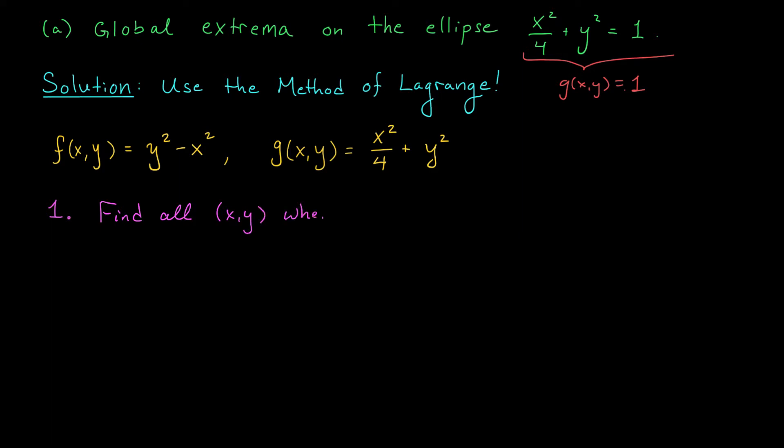Remember, I mentioned that global maxes and mins can occur at these points, but they won't get picked up by our Lagrange equation. So I guess our first job here would be to find the gradient of g. The gradient vector, nabla g, is given by partial g by partial x, that's x over 2, and partial g by partial y, that's 2y.